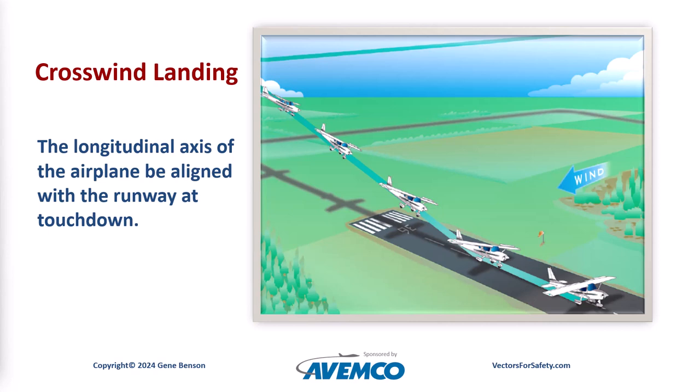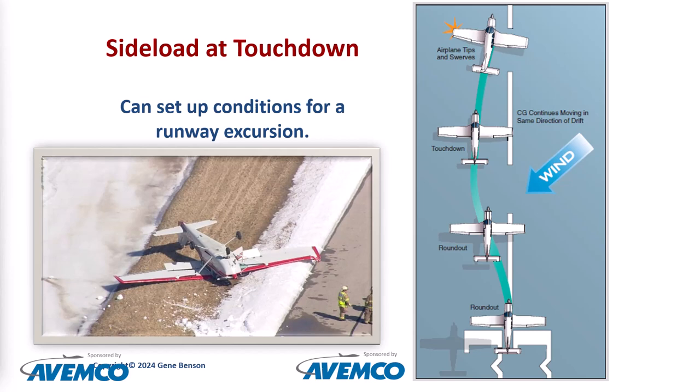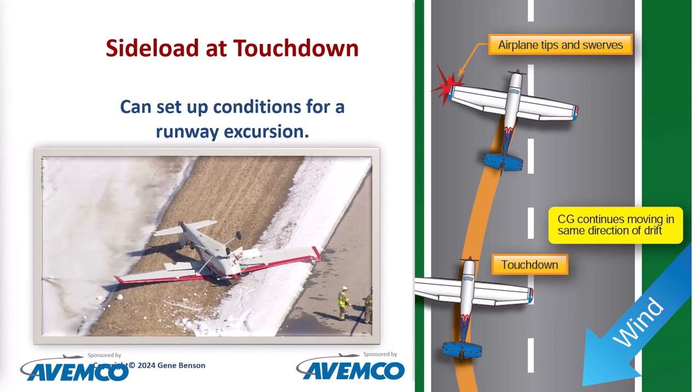It is very important that the longitudinal axis of the airplane be aligned with the runway at touchdown. With a side load, the center of gravity continues moving in the same direction as the drift. This will cause the airplane to tip and swerve, which can set up the perfect storm for a runway excursion. The side load can also lead to a ground loop.